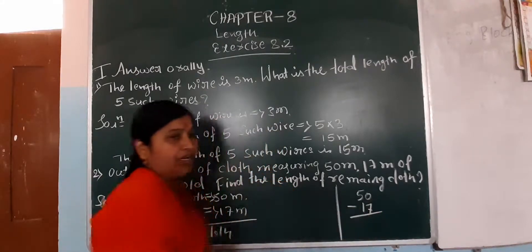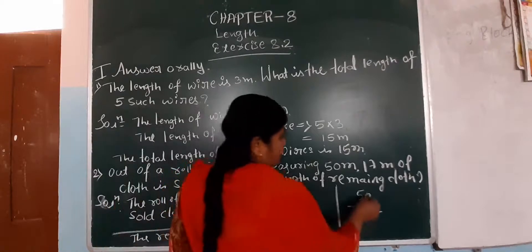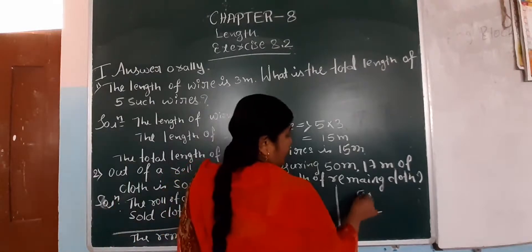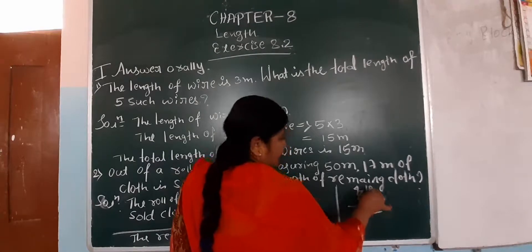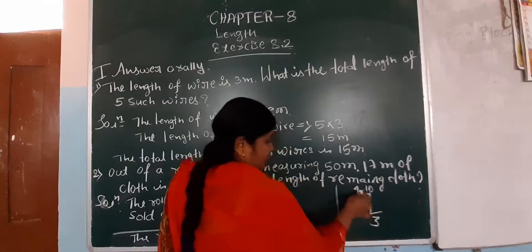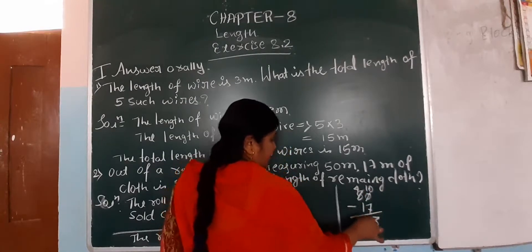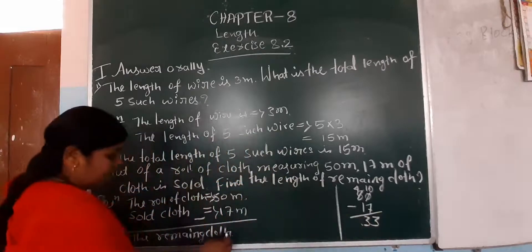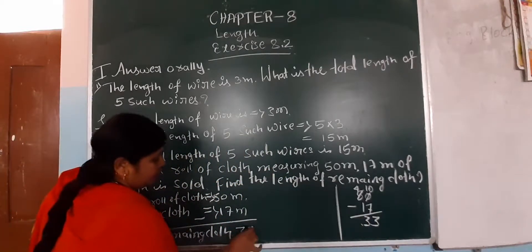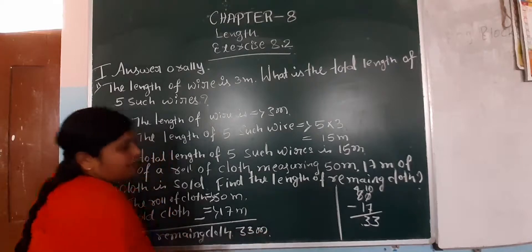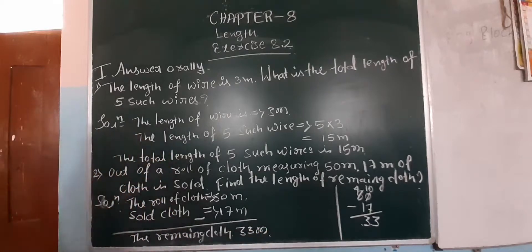50 minus 17: take borrowing from the tens place. 10 minus 7 is 3, and 4 minus 1 is 3. So the remaining cloth is 33 meter. Like this, you subtract to find the remaining cloth.